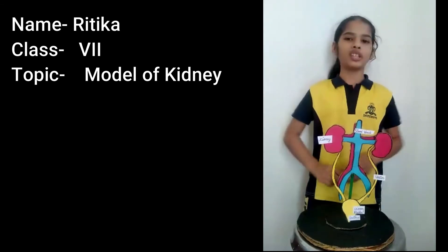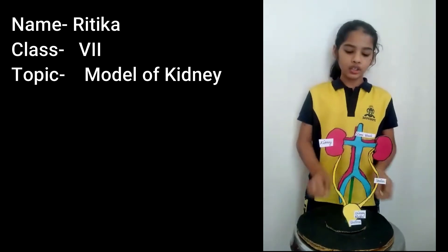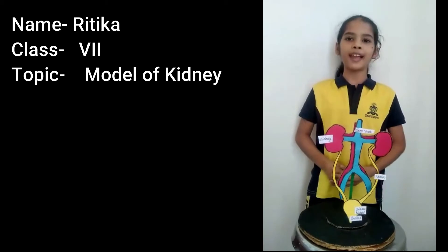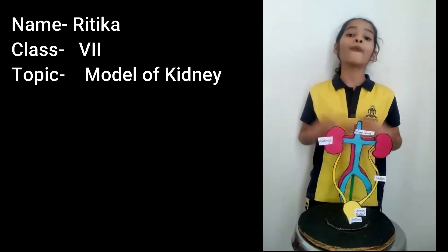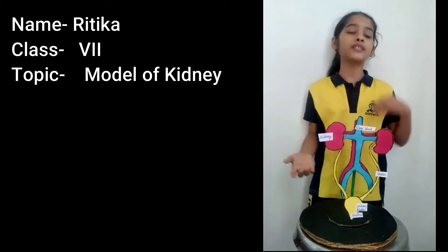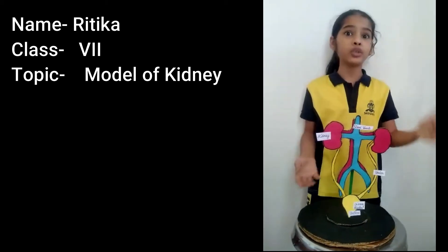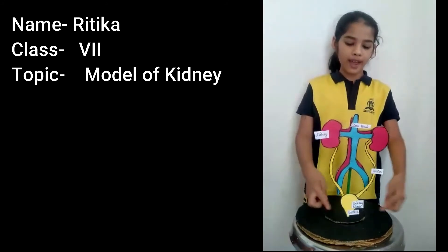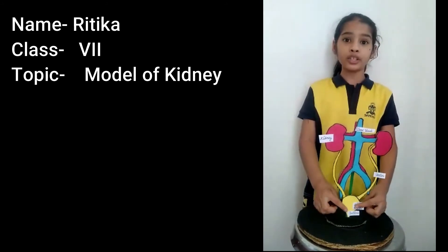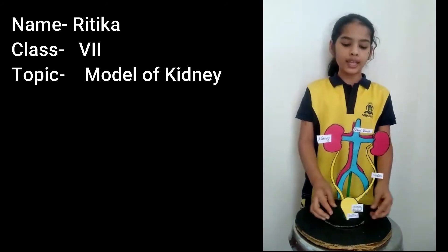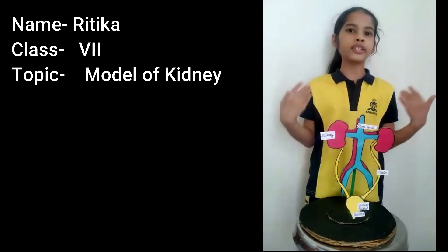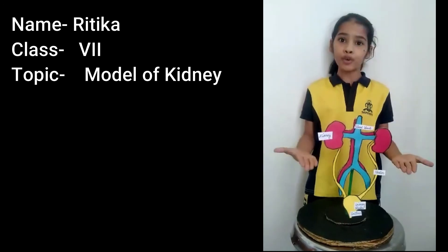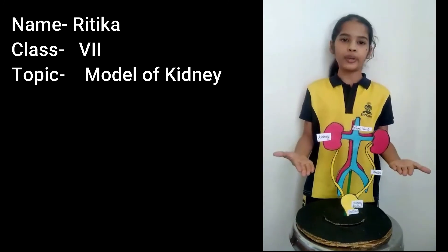Our third organ is urinary bladder. Urinary bladder is a bag-like structure which can contain 500 to 800 milliliters of urine. When it is filled with urine, it gives signals to our brain that we have to pass out the urine.